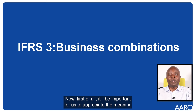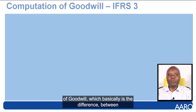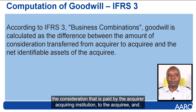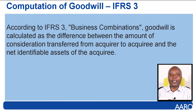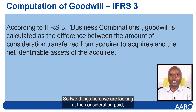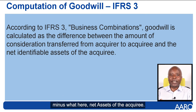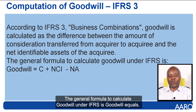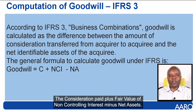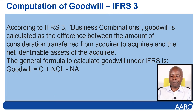First of all, it will be important for us to appreciate the meaning of goodwill, which basically is the difference between the consideration that is paid by the acquirer — the acquiring institution — to the acquiree, and the net assets of the acquiree company. We're looking at the consideration paid minus the net assets of the acquiree. The general formula to calculate goodwill under IFRS is: goodwill equals the consideration paid plus fair value of non-controlling interest minus net assets of the acquiree company.